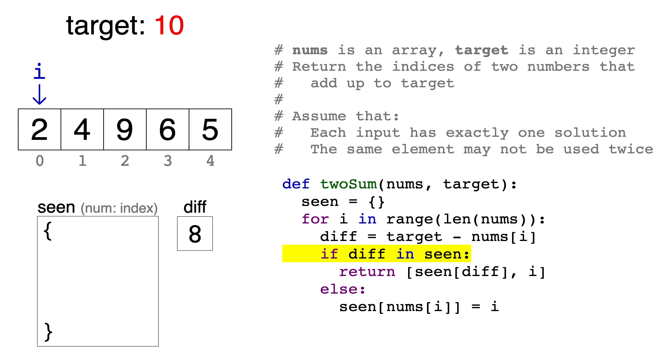In other words, we're asking, have we seen 8 before somewhere in this array? The most important thing here is that checking for a key in a dictionary using this syntax runs in constant time. I'll come back to this point later, but for now just keep that in mind.